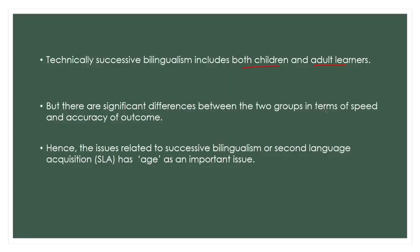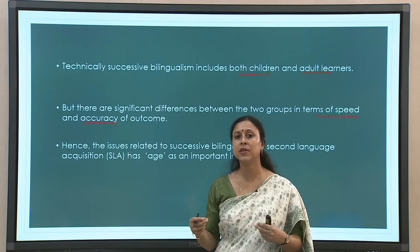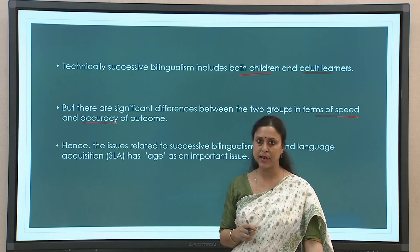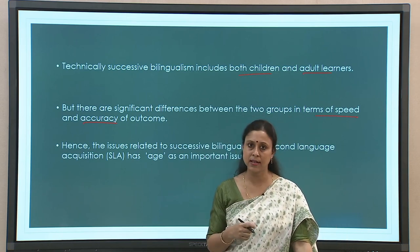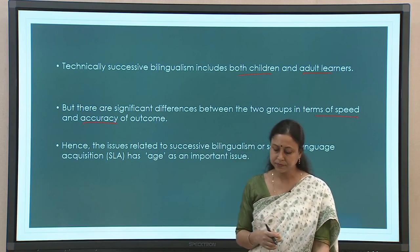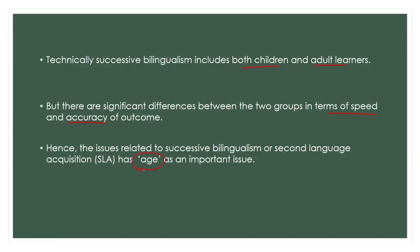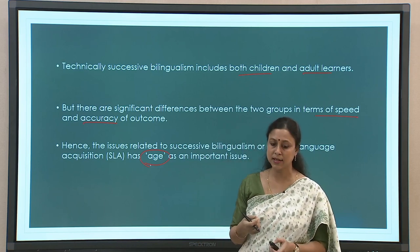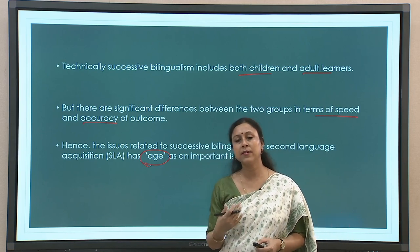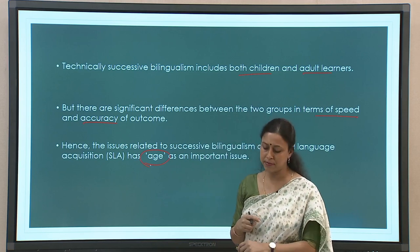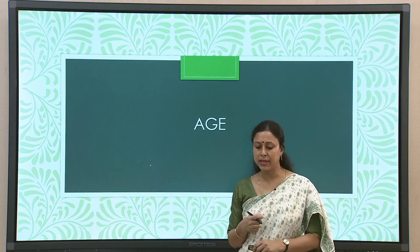When we talk about children versus adults as second language learners — though they are part of one broader category — there are some important differences between these two groups. The difference will typically be in terms of speed and accuracy of outcome: how fast acquisition of the second language happens, and how quickly a child learns versus how quickly an adult learns. Because of these factors, age has become a very important variable to study.